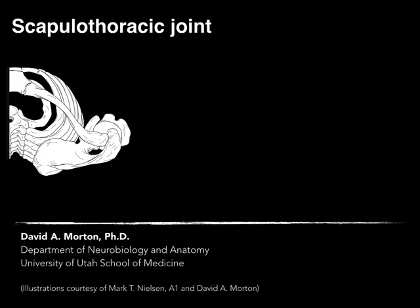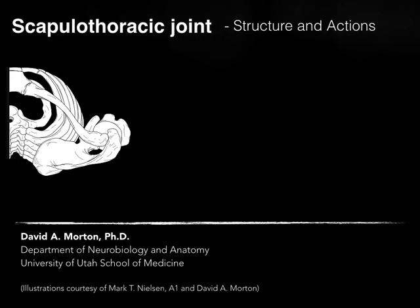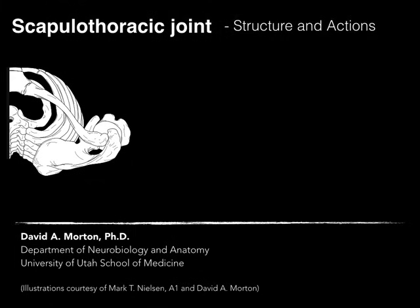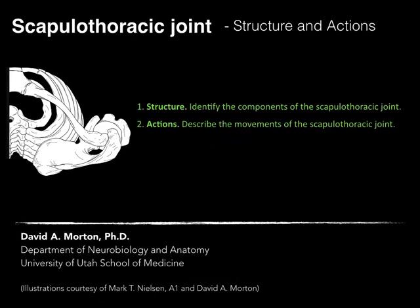Let's talk about the scapulothoracic joint, specifically about the structure and actions of the scapulothoracic joint. We have two objectives: first, structure — we're going to identify the components of the scapulothoracic joint; and second, the actions — describe the movements of that scapulothoracic joint.